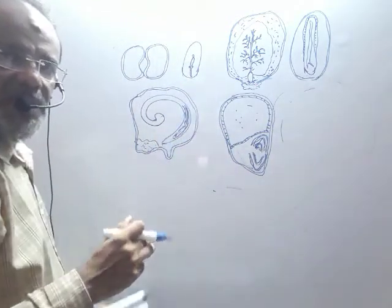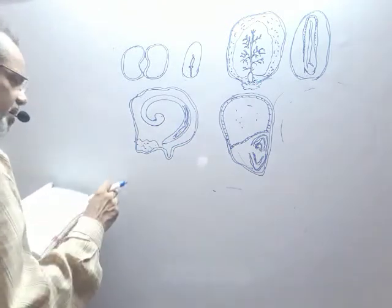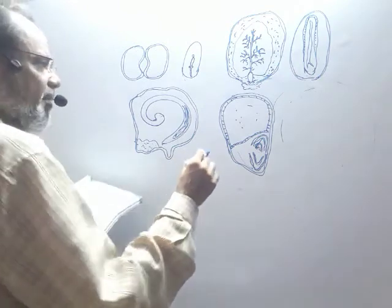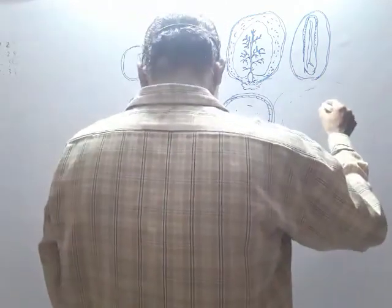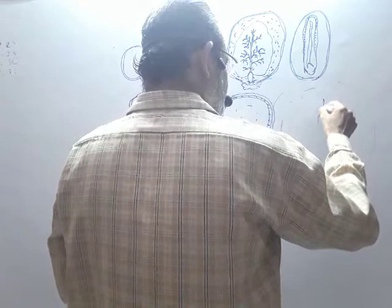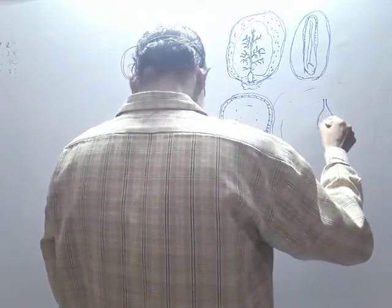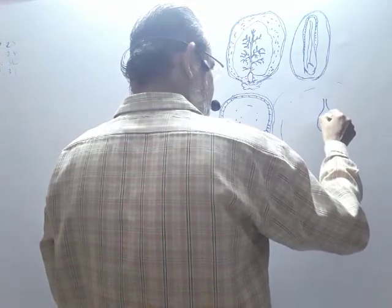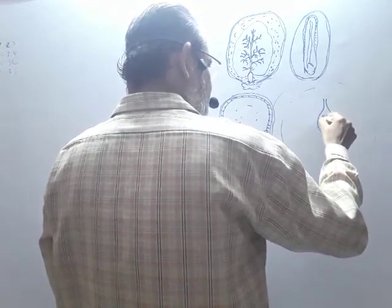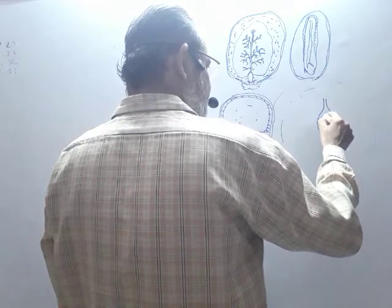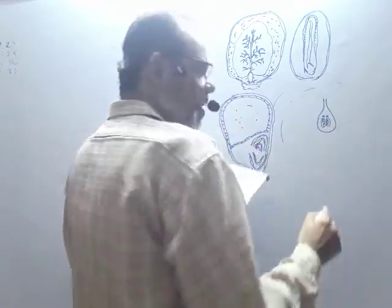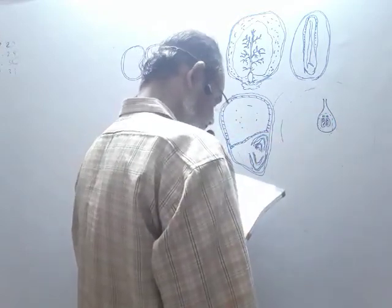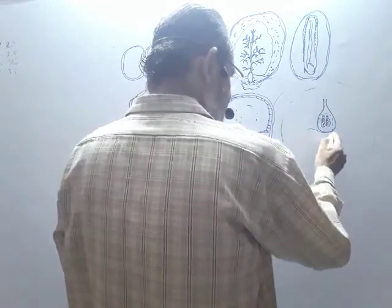These are the seeds. Now look at the fruits — these two are false fruits. Apple: in the apple, this is the ovary. Inside the ovary are the ovules — one, two, three, four. After fertilization, this ovule turns into seed, and this ovary wall develops into the epicarp.